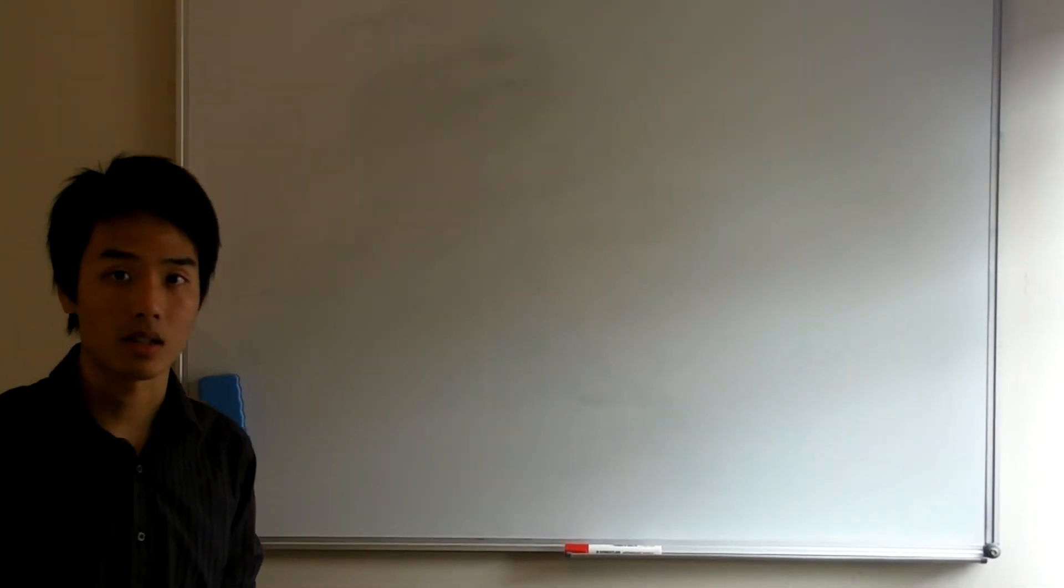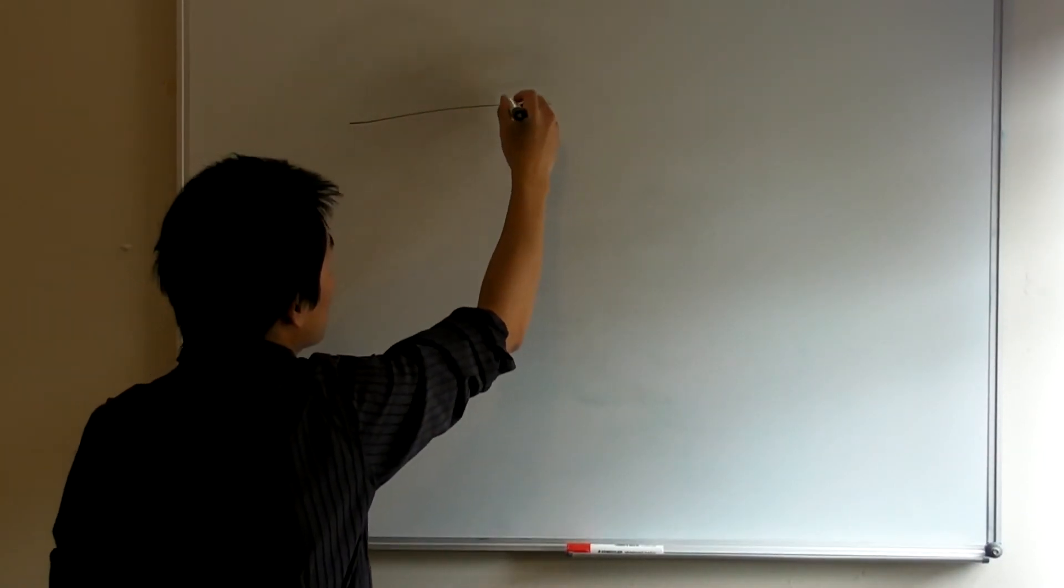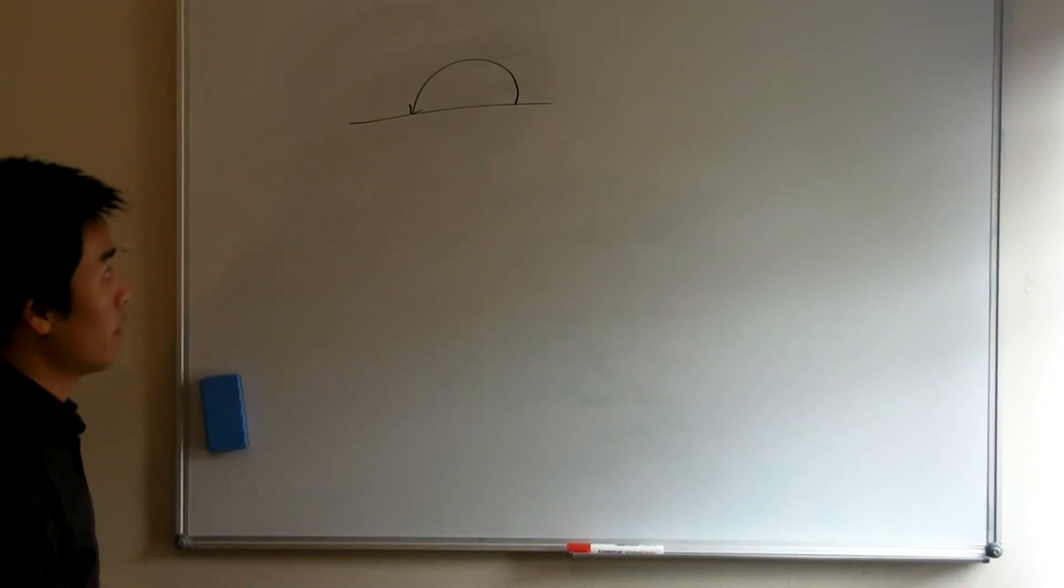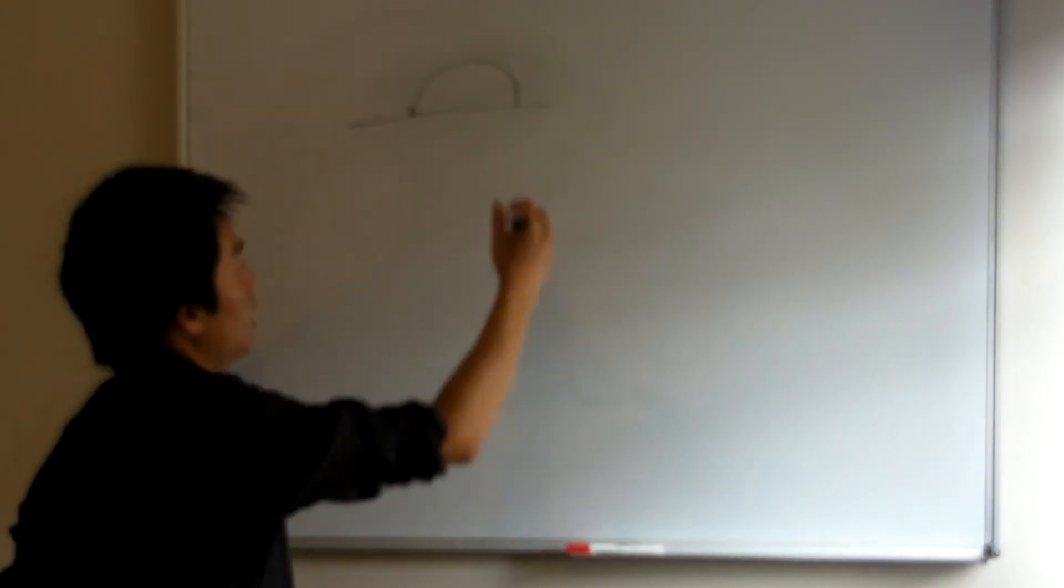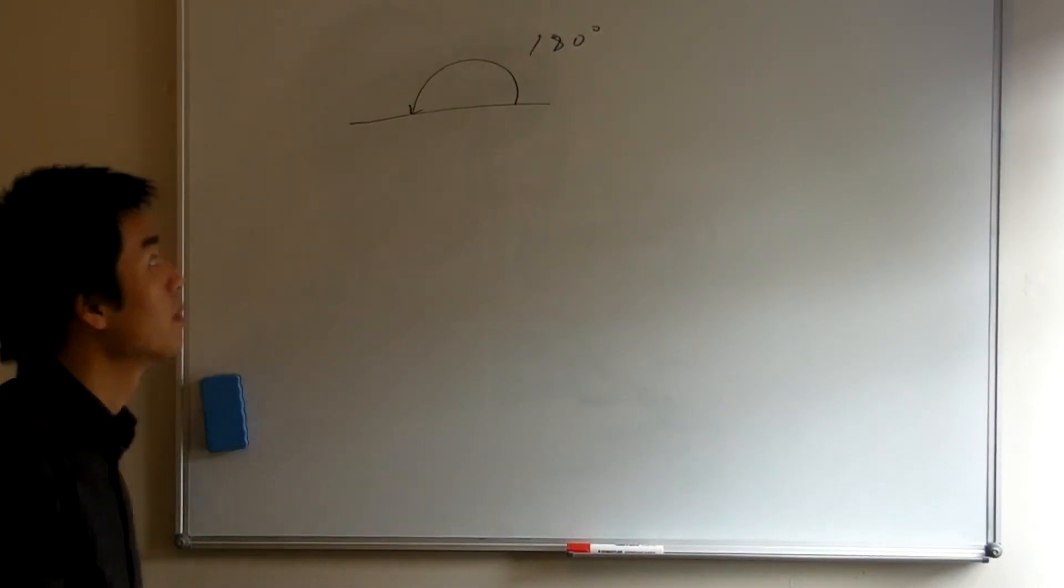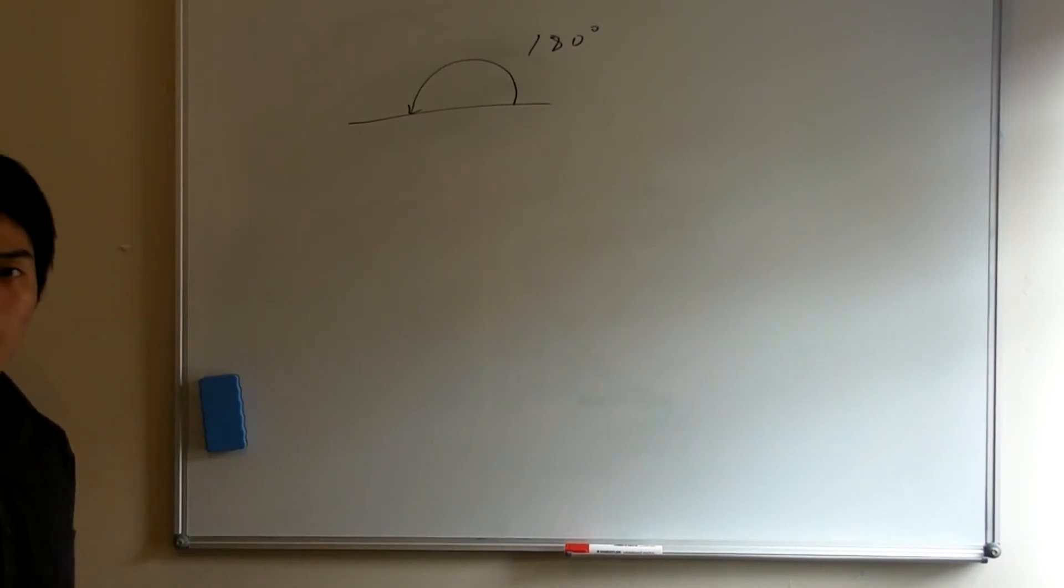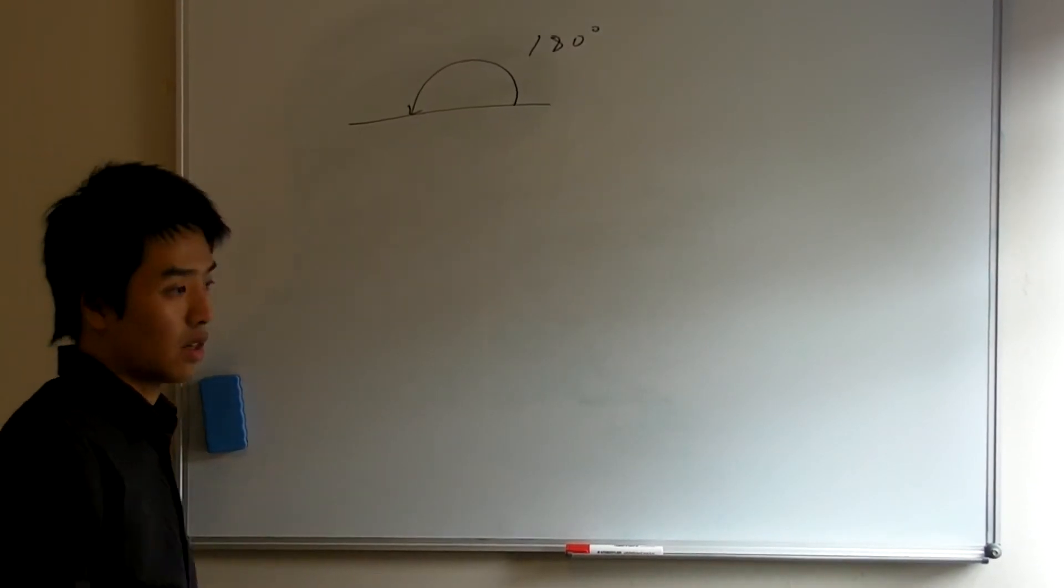So what exactly is the radian measure? And I'll begin with the familiar diagram. That is, the amount of angle in a straight line angle is 180 degrees. Now, the thing to realize is, there's nothing special about the number 180. It's just a convention, an arbitrary one.